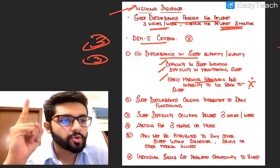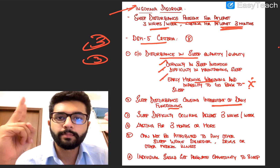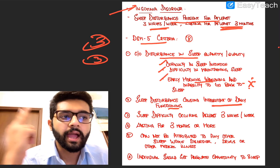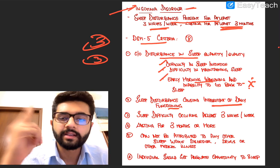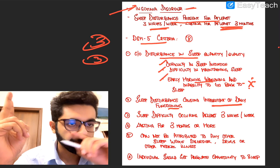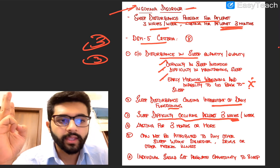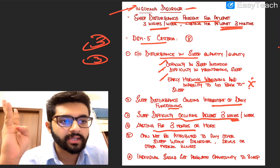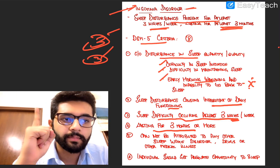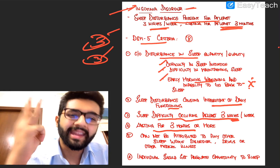Second, it should cause some impairment of daily activity. Sleep needs vary for different people, and you can only say a person has insomnia when their daily activity is affected because of lack of sleep. Third, sleep difficulty occurring at least three nights a week. Fourth, lasting for three months or more. Three nights a week and three months are the most important criteria.